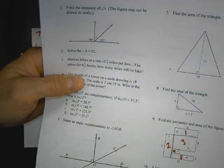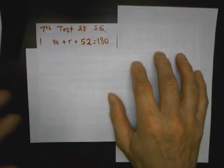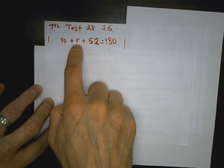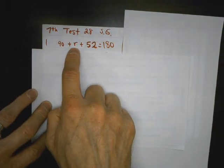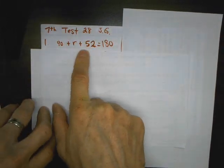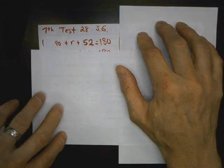Meaning together all three of them add up to 180. So we take the measures that they gave us, 90, one they didn't give us so we used the variable r because they used r in the problem, and 52 they gave us. Together, or adding them together, equals 180.